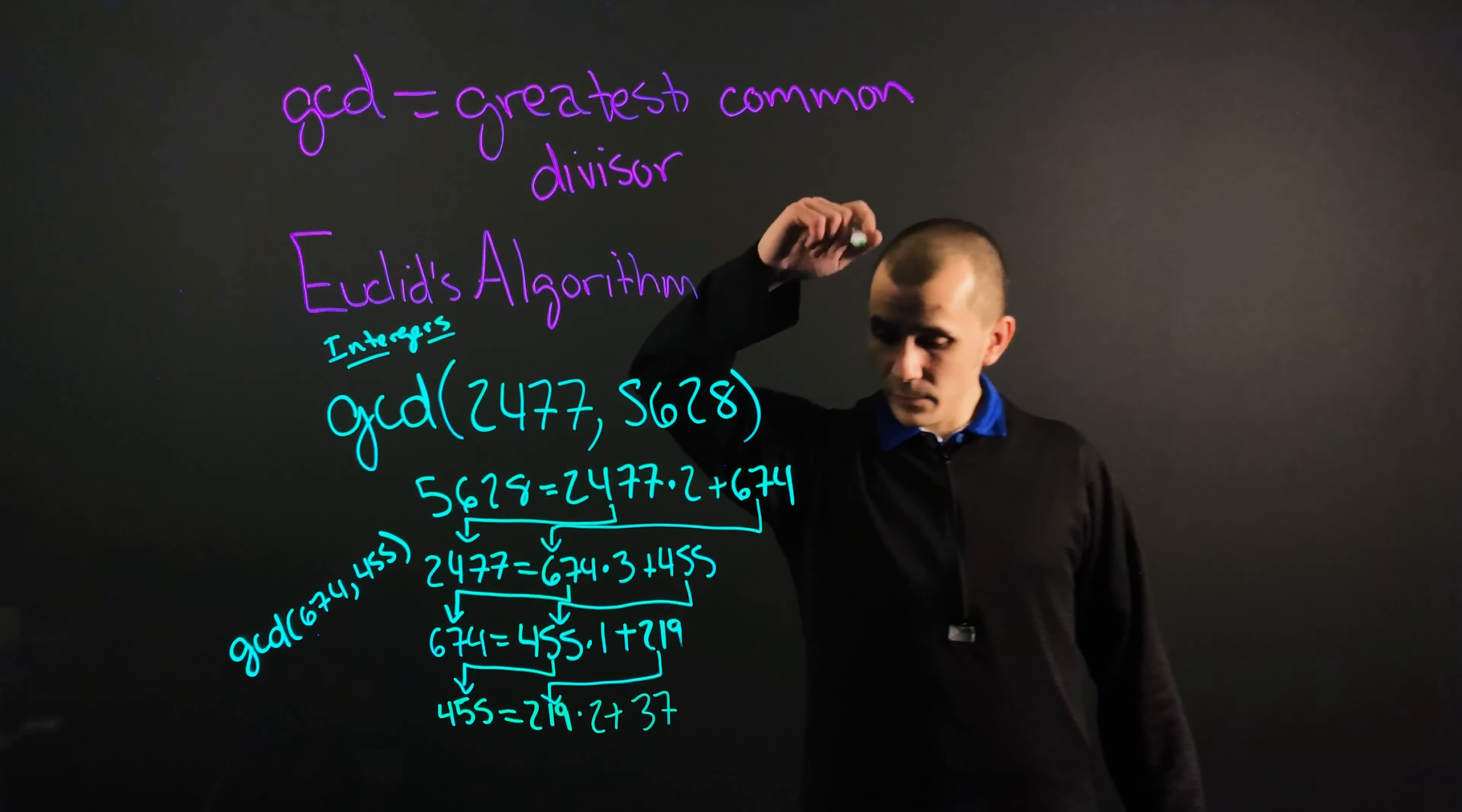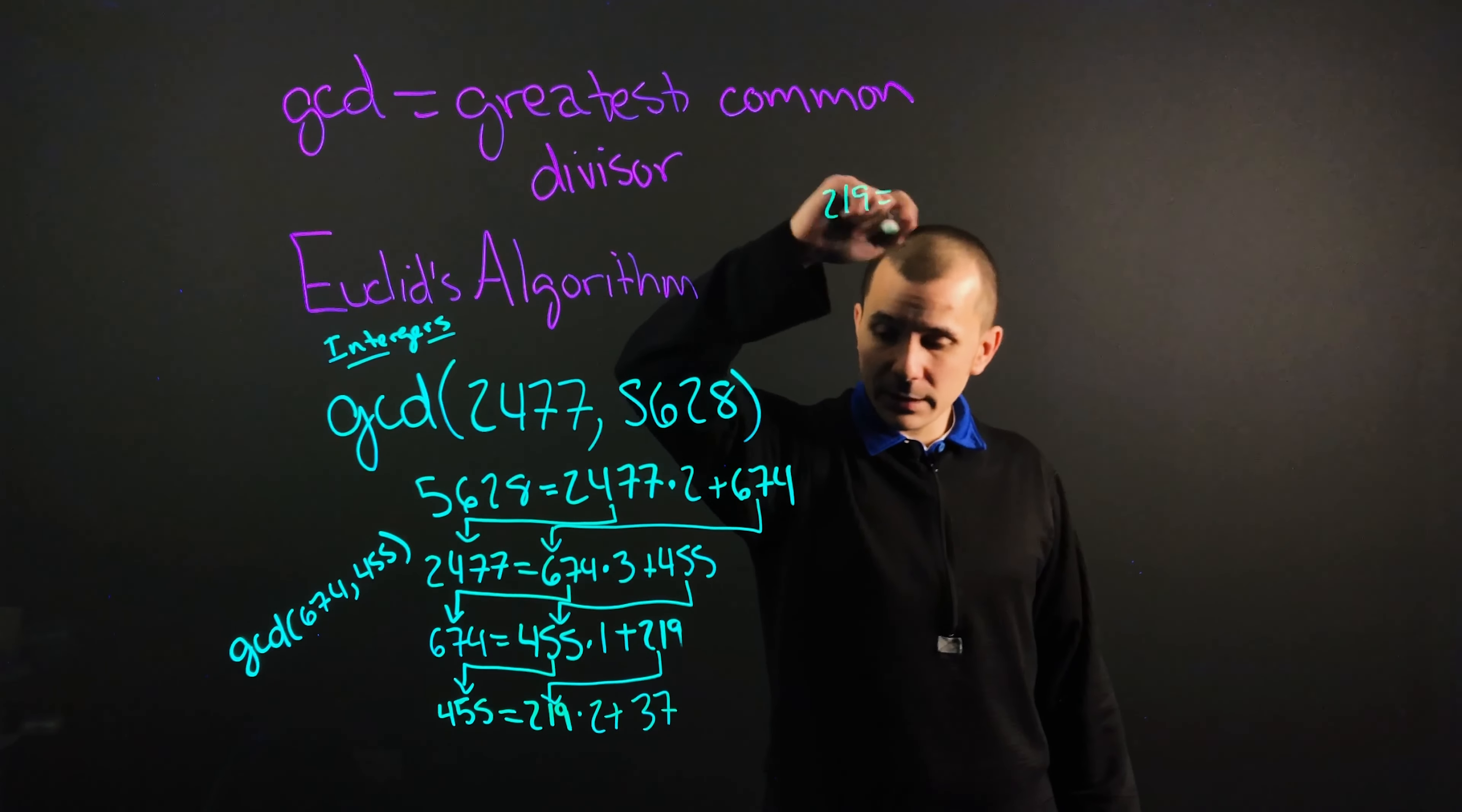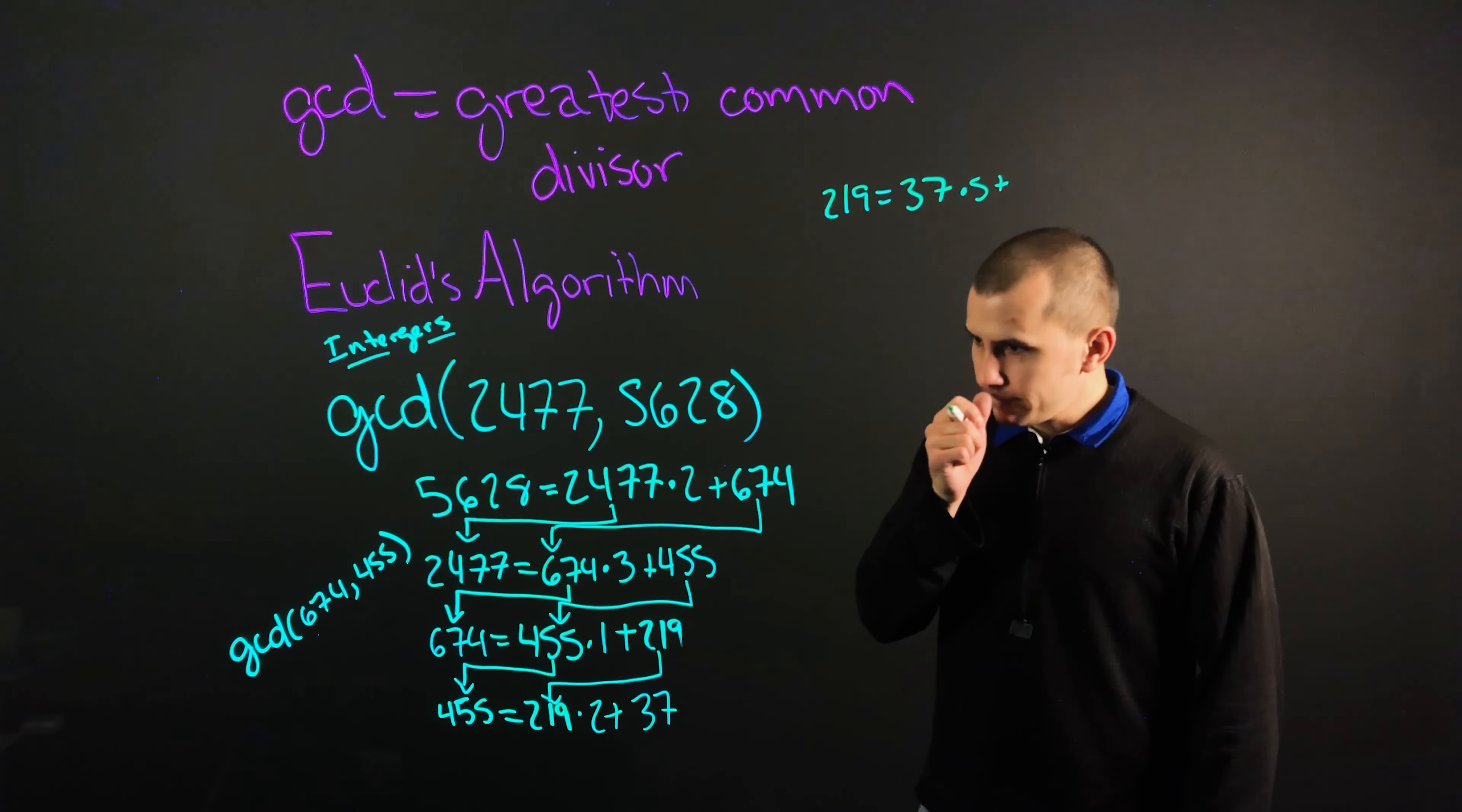And again, we'll come back over here to continue this. So we will have our 219 equals 37 times by 5 plus 34.